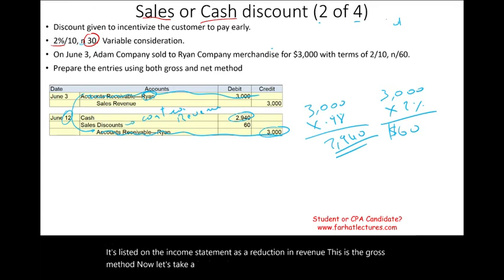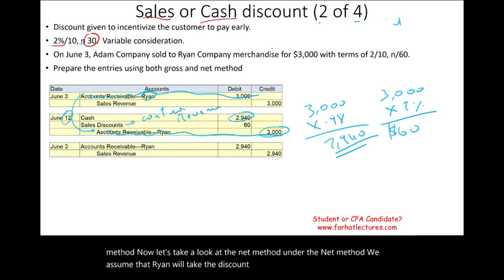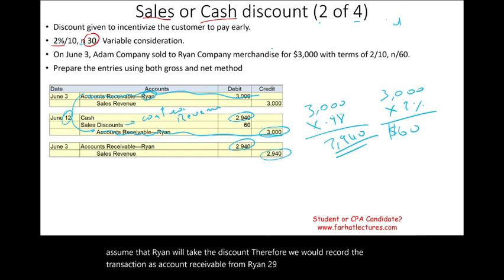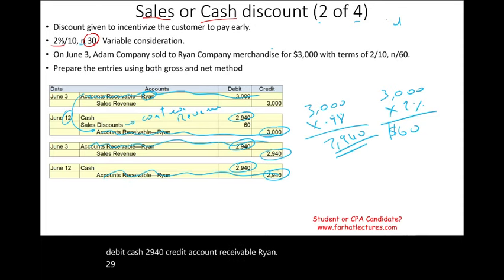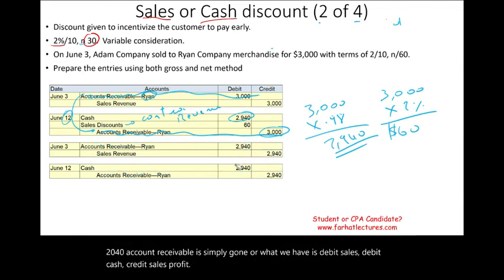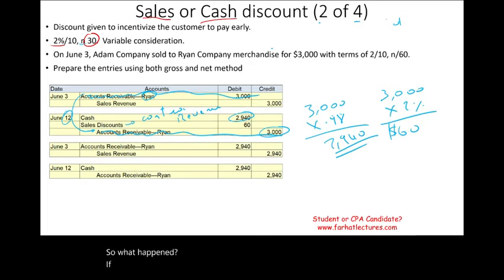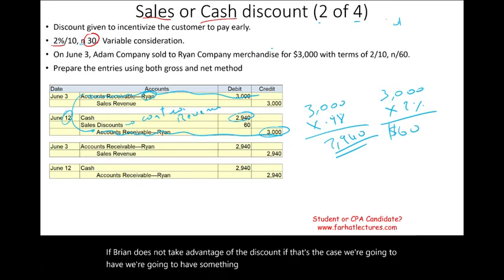Under the net method, we assume Ryan will take the discount, so we record the transaction as: debit accounts receivable $2,940, credit sales revenue $2,940. If Ryan pays within the discount period, we simply debit cash $2,940 and credit accounts receivable $2,940. If Ryan does not take the discount and pays the full $3,000 on July 29th, the difference of $60 is called 'sales discounts forfeited,' which is treated as other revenue.